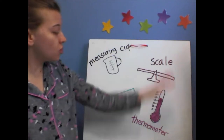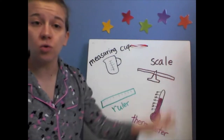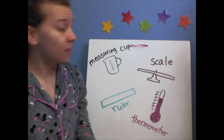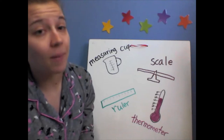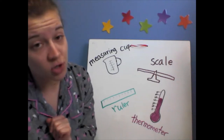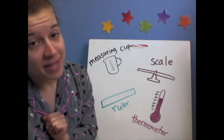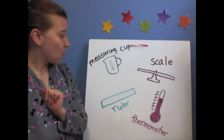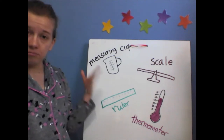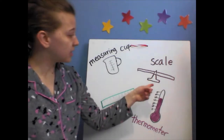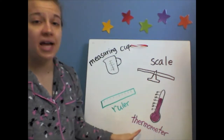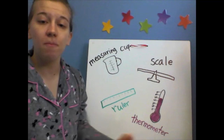I drew our measuring tools that we've been learning about. Remember, Ms. Rabideau is not an artist, but she did try her best. So we have a measuring cup, a scale, a ruler, and a thermometer.